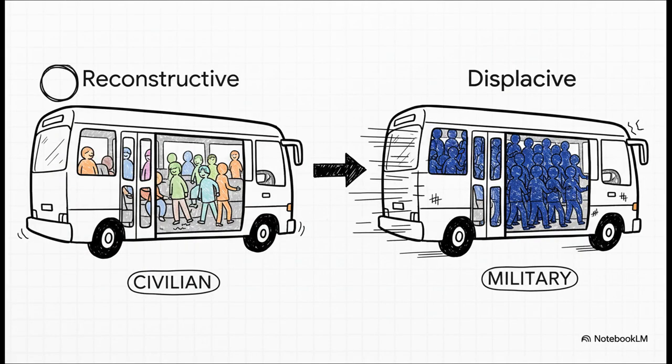To really get this, let's use an analogy. Think about two ways to board a bus. The reconstructive path is like civilians getting on — people move around individually, they find a seat, they take their time. It's slow and orderly. But the displacive path is like soldiers boarding a bus — a single, coordinated, lightning-fast maneuver. Everybody shifts together instantly. It's fast, it's violent, and it creates a ton of strain.